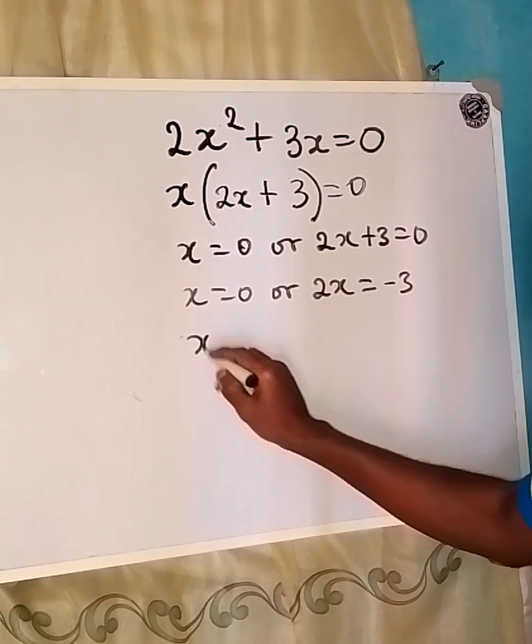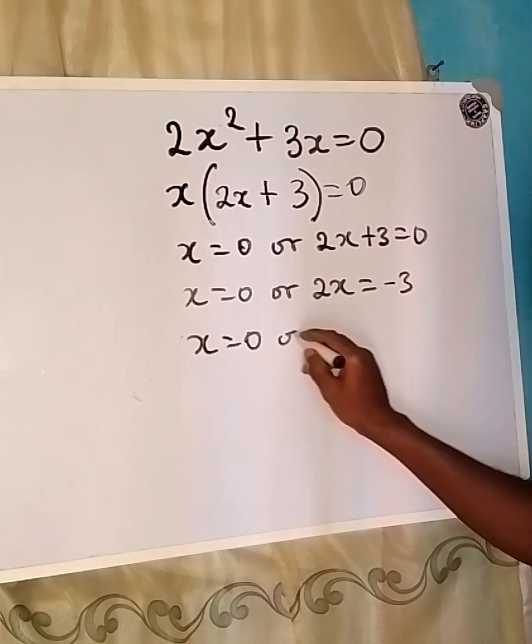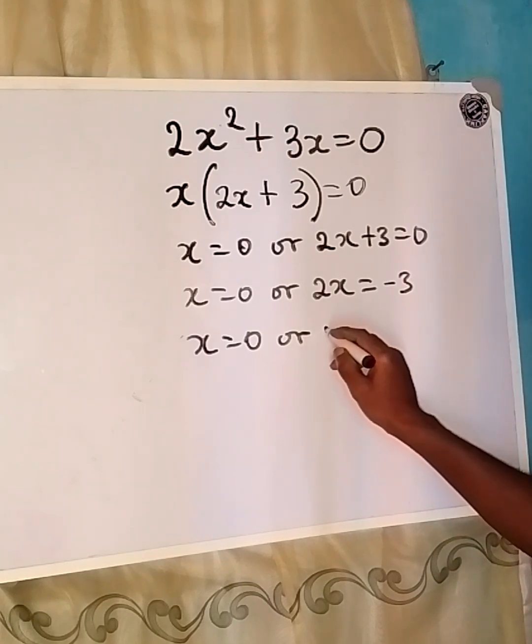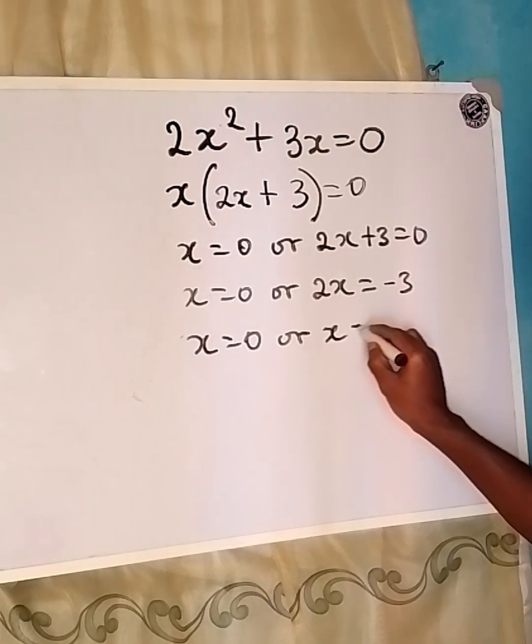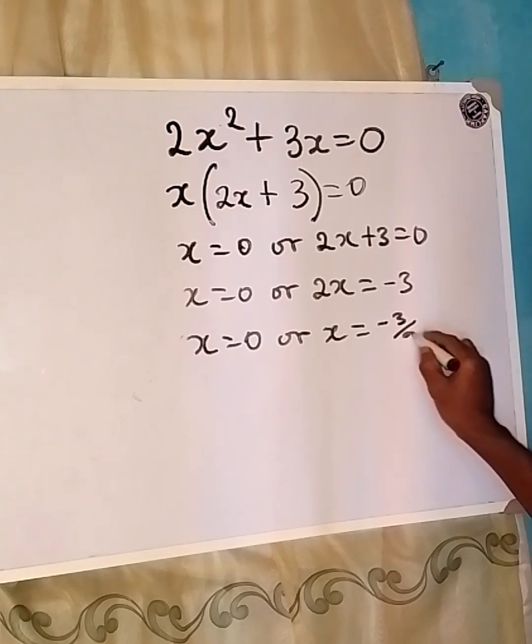Now x on this side remains 0 or from here we are going to divide both sides by 2 so that x will be equal to negative 3 over 2.